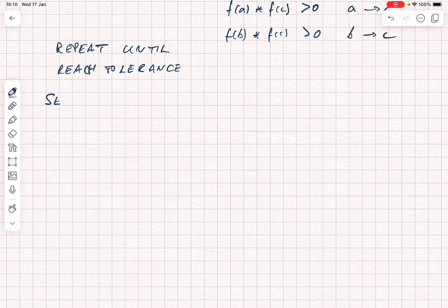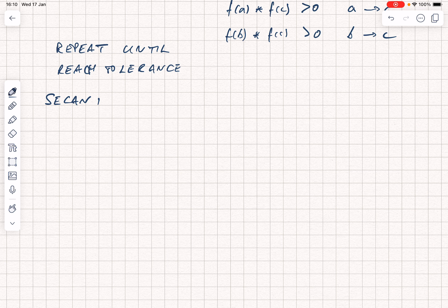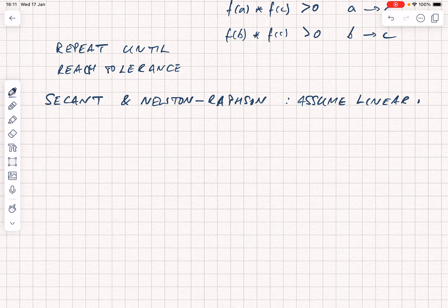The other root finding algorithms that we're thinking about are the secant and the Newton-Raphson approaches, and really they're the same idea. They both assume some kind of linear fit, and they use that to find the root. The way that they get the linear fit is different. We're going to assume that y(x) is equal to some gradient m, and then we multiply that into x minus x0, and then we add on f(x0).